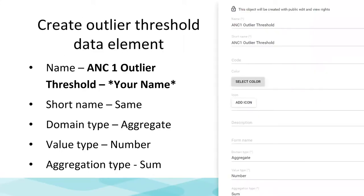How do we make the outlier threshold? The first step is to make your data element. In the maintenance app, you click data elements, click the plus button, and you're into making a data element. Give your data element a name — in this case, 'ANC1 outlier threshold hyphen your name' — and also a short name. Add your name so you can recognize your outlier threshold from others who may be making one at the same time. Your domain type will be set to aggregate, value type to number, and aggregation type to sum.